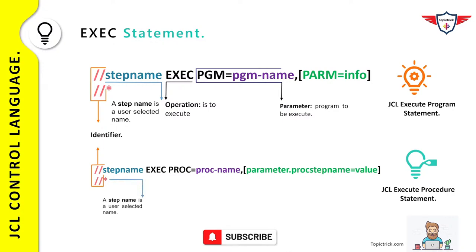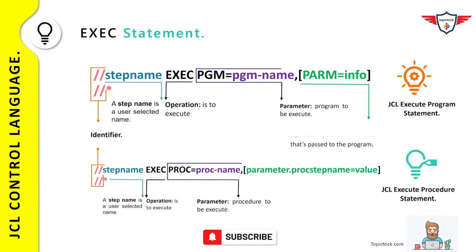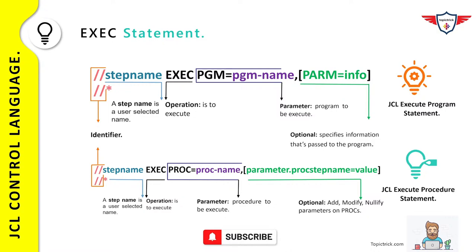You can execute either an in-stream proc or catalog proc depending on your requirement. If you want to override or pass a value to a parameter defined in your proc, you specify the parameter name dot the proc step name followed by the value. You can add, modify, or nullify parameters defined in your procedure. Remember, PROC=procname is a positional parameter, not a keyword parameter.